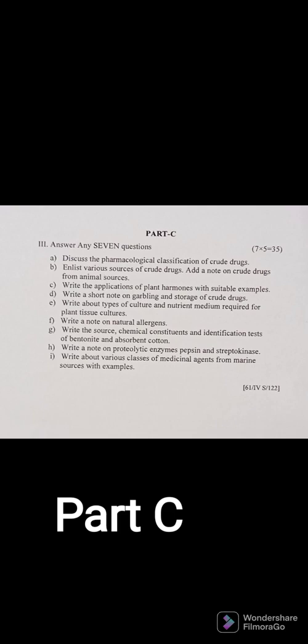Part C Question 6: Write a note on natural allergens. Natural allergens include pollens, different types of plant products, and animal products — from wherever allergic reactions can happen. Allergic reactions can occur through touch, inhalation, or any type of injection when inserted into the biological system. Write the examples you have studied to explain the types of allergic reactions produced.